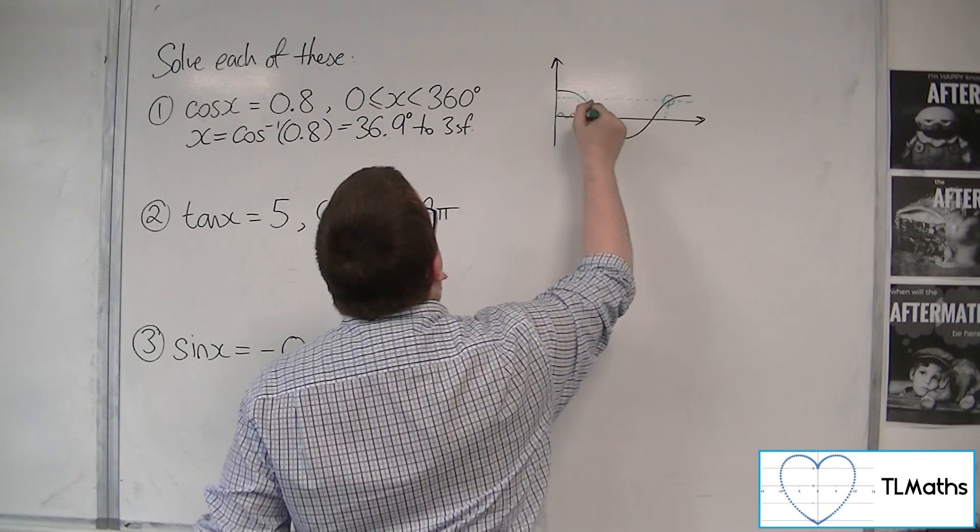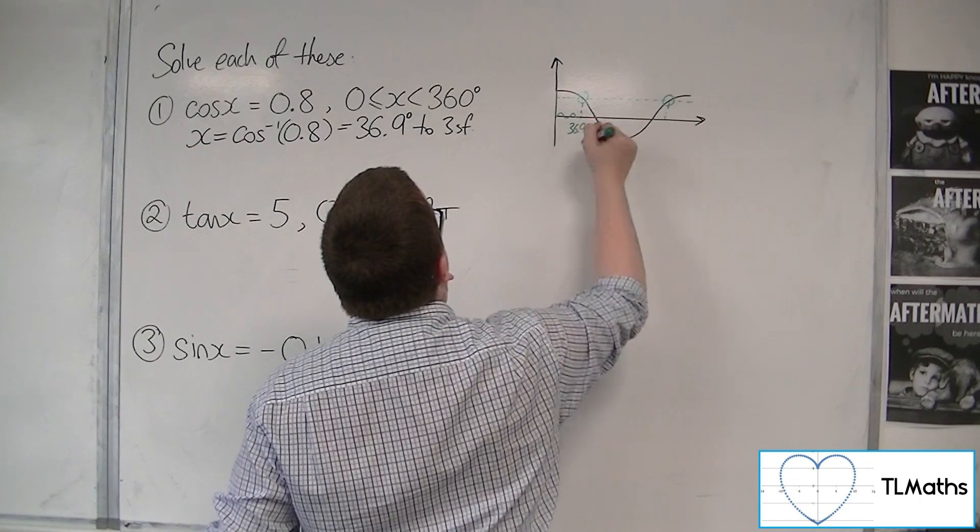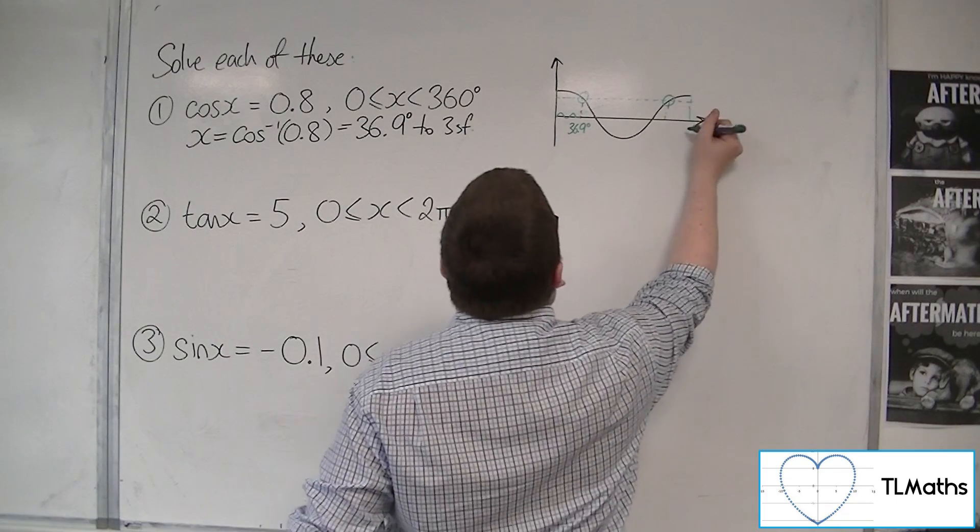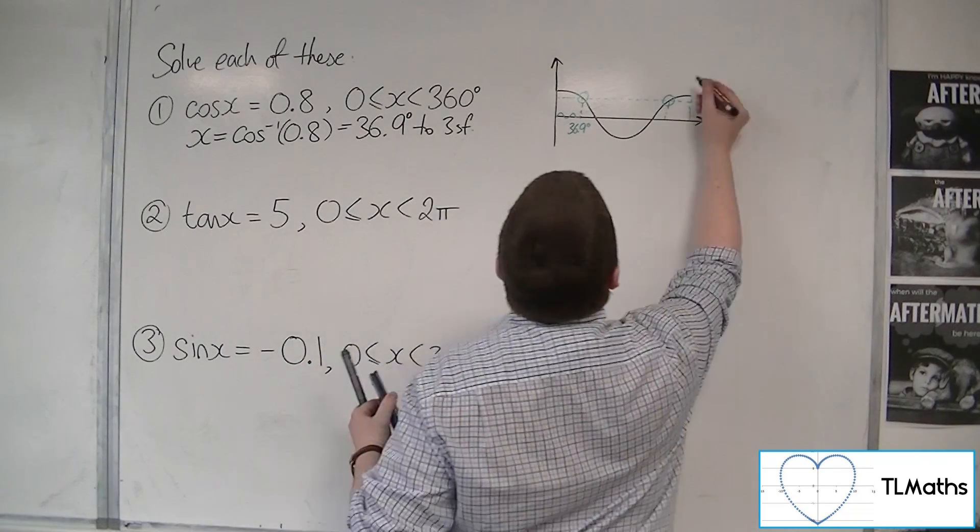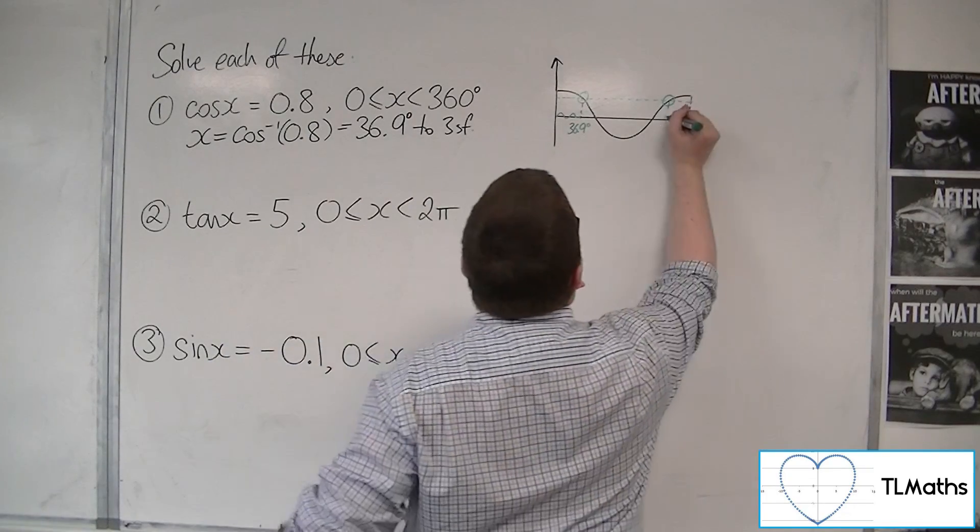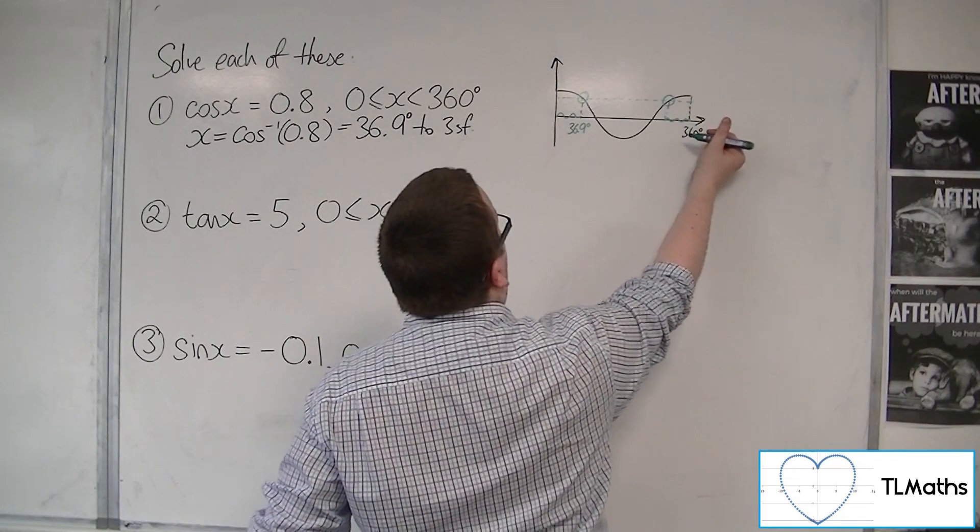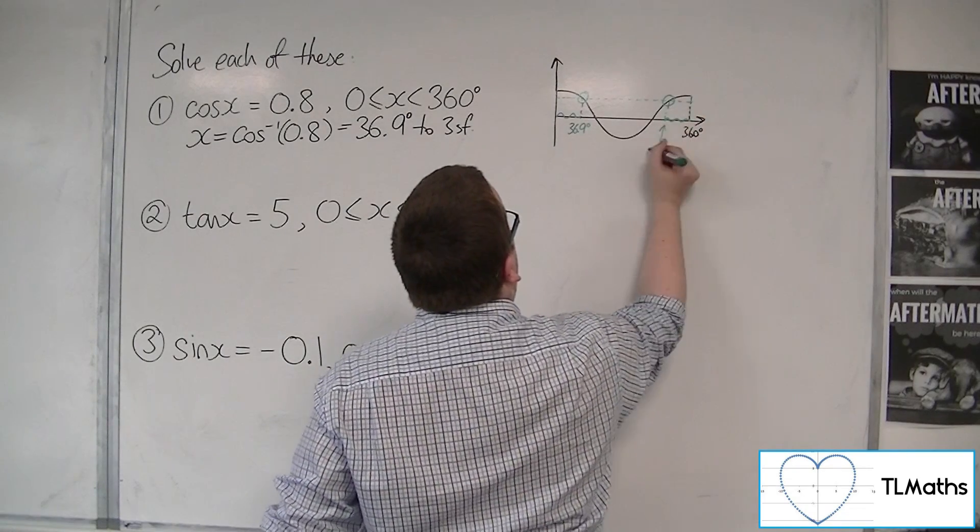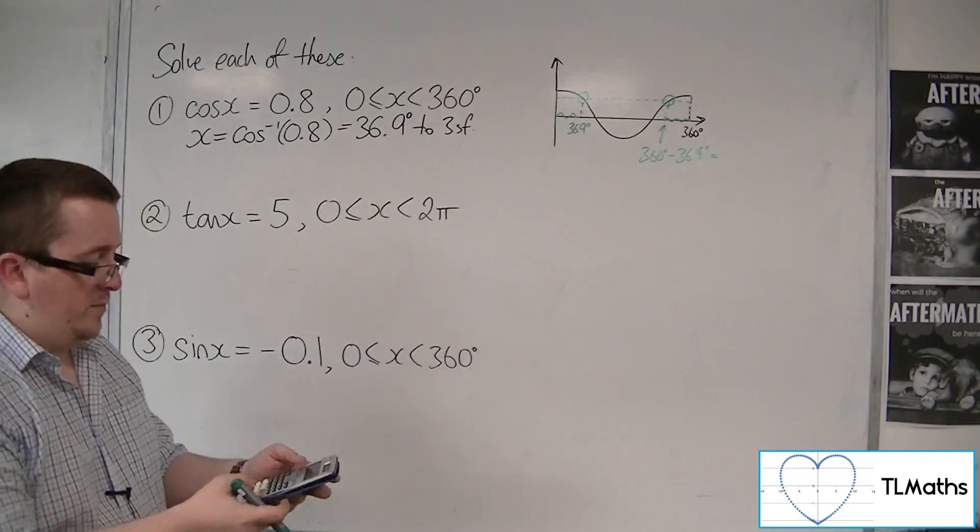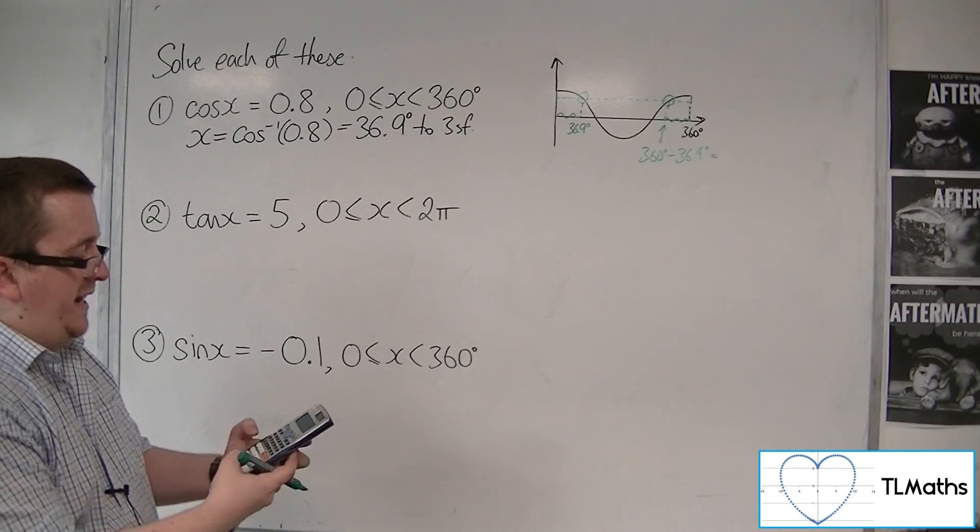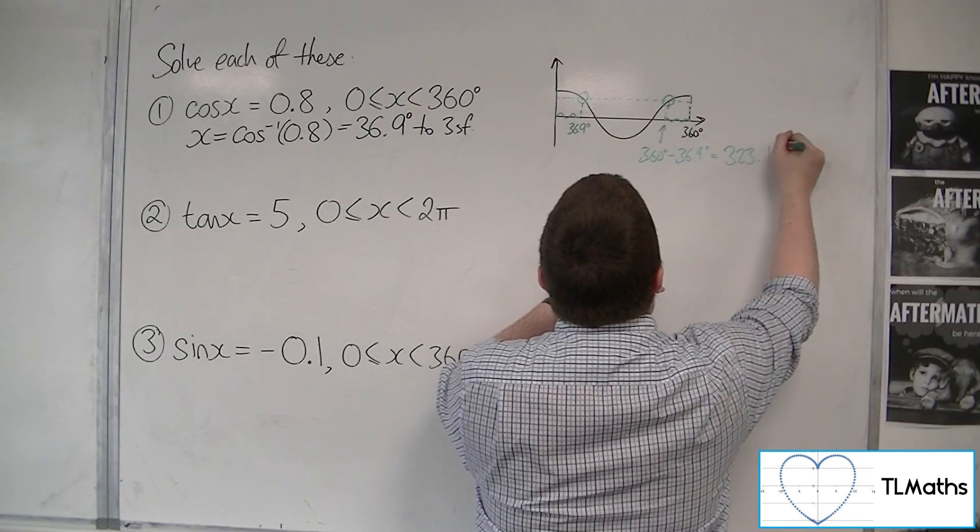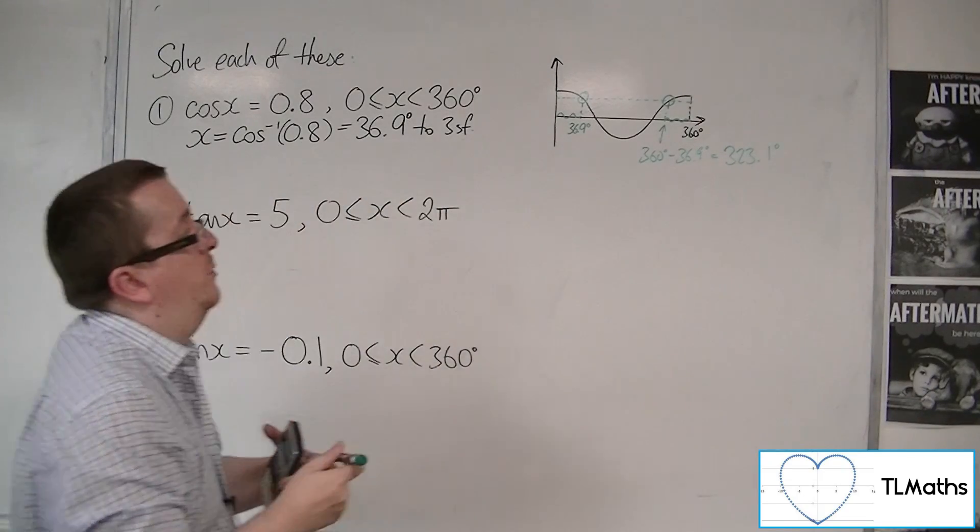If that distance is 36.9 degrees, then this distance between 0 and 360 is also 36.9 degrees, and so I can find that by doing 360 take away the 36.9 degrees, but I'm going to use the full length display. So, 360 take away the answer key, it's 323.1 degrees to one decimal place.